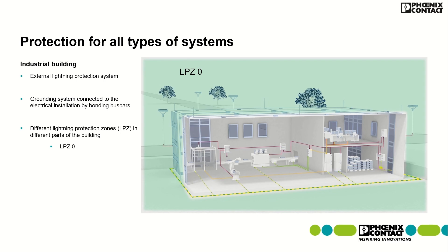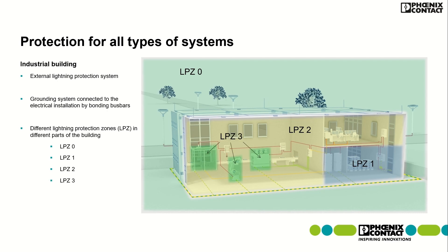Lightning protection zone 0 is the greenish area outside the building. The outer boundary of the building is the bluish zone, representing zone 1. Lightning protection zone 2 is the yellow zone, primarily corresponding to the sub-distribution board of the building. Lightning protection zone 3 is the green zone, representing sensitive electrical and electronic equipment.